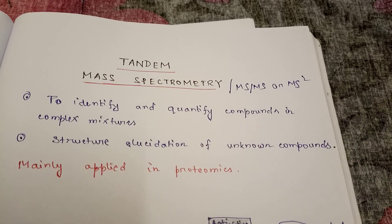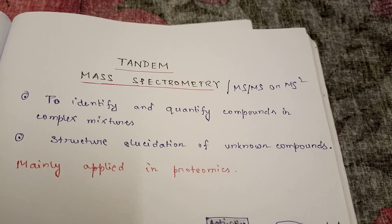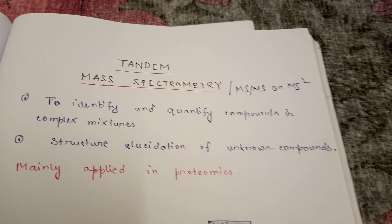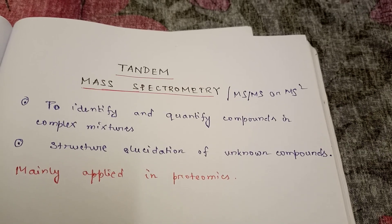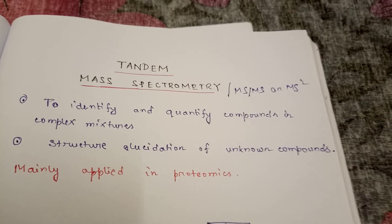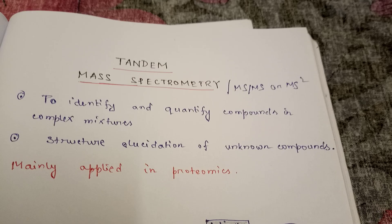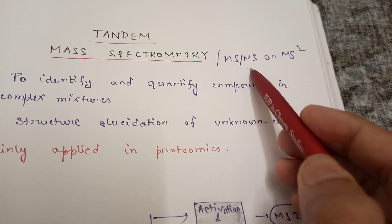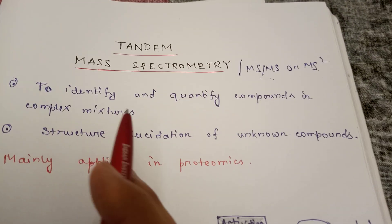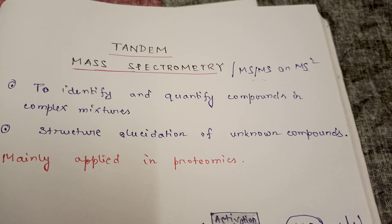Welcome to Bayesumit. Today we learn about tandem mass spectrometry. Tandem means something is getting repeated, so here mass spectrometry is getting repeated. Two mass analyzers are coupled, but it can be more than two also. So sometimes it is called MSMS or MS squared. For identification and quantification of compounds in complex mixtures, we perform tandem mass spectrometry.